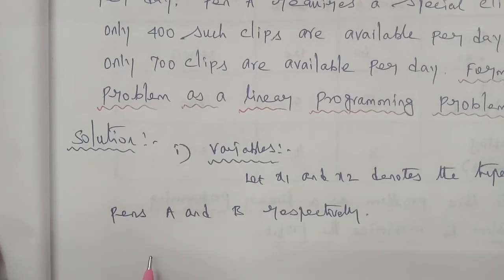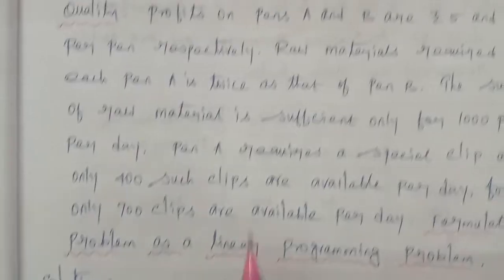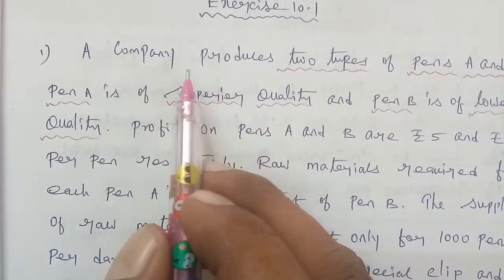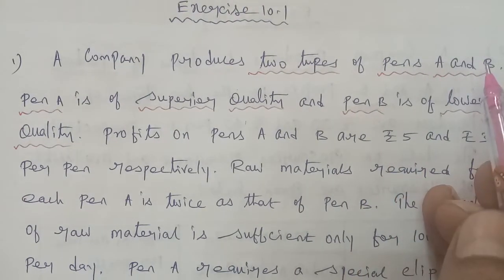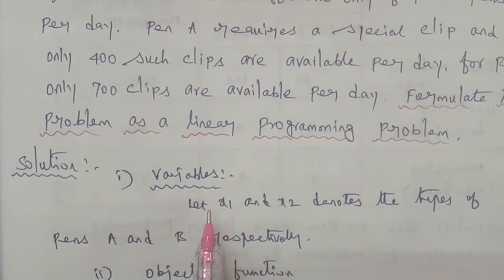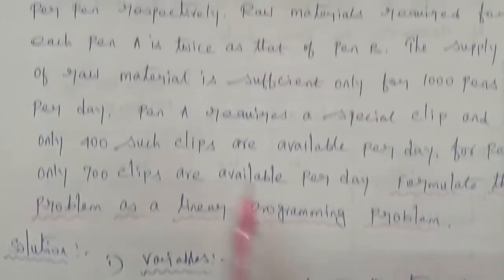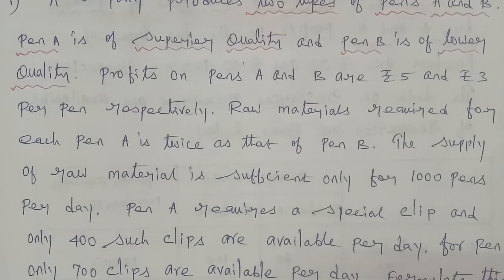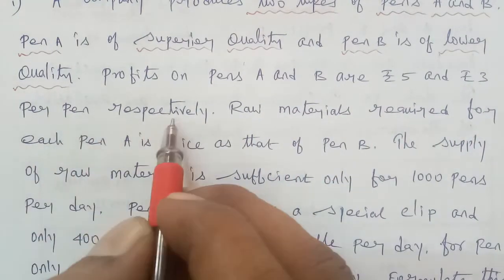Step 2 is the objective function. The objective function is profit. We have two types of pen produced: type A denoted by X1, and type B denoted by X2. The profit on pen A is Rs. 5 per pen and on pen B is Rs. 3 per pen respectively.